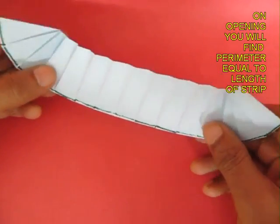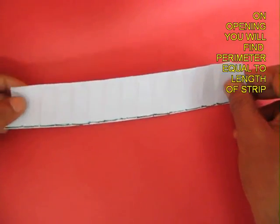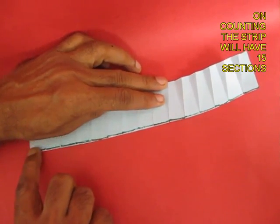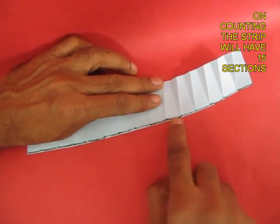On opening the strip you will find the circumference of the circle was actually the length of the strip with 15 sections.